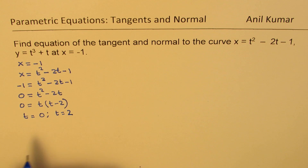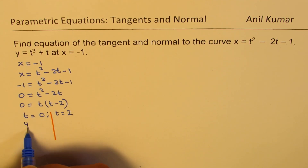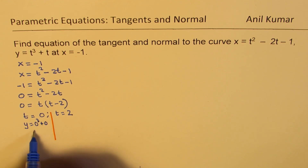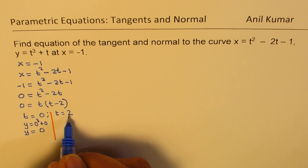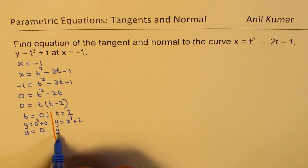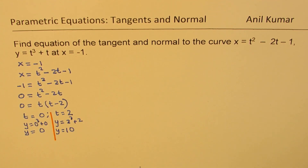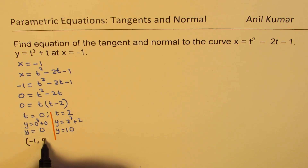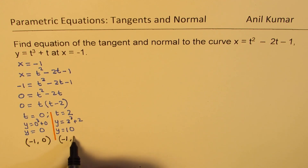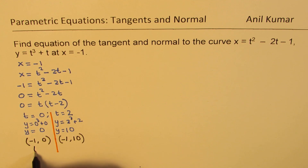These two values of t give us two different values for y. Substituting t equals 0 into y equals t cubed plus t, we get y equals 0. Substituting t equals 2, we get y equals 2 cubed plus 2, which is 8 plus 2, equals 10. So we get two points: (minus 1, 0) when t equals 0, and (minus 1, 10) when t equals 2.